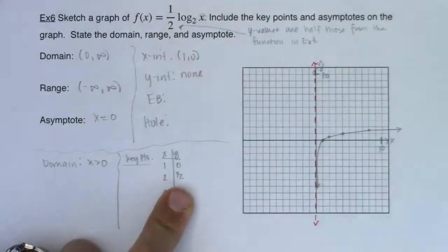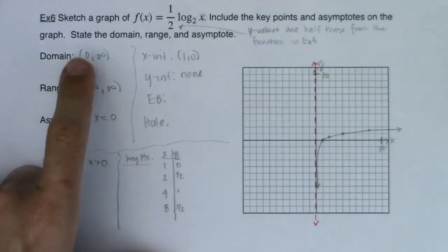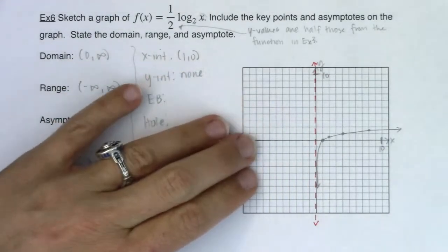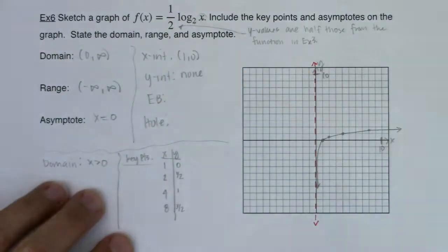For end behavior, again, take a look at your domain. You do not have the left end. It's not there. So I have no end behavior on the left, and I have a right arrow up.